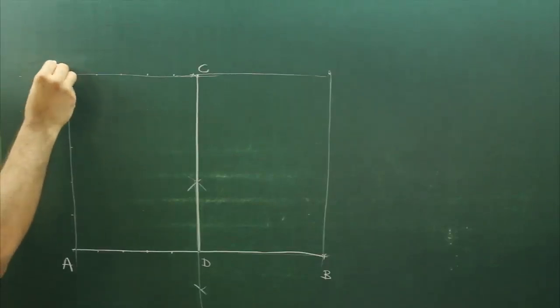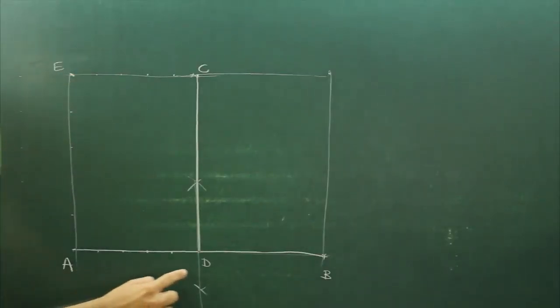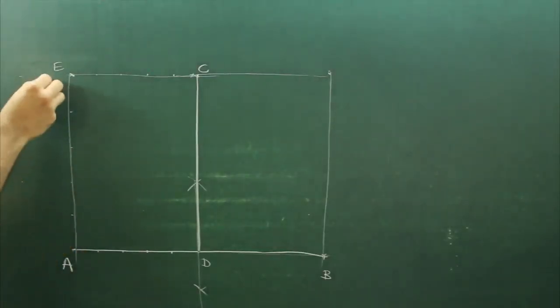Then we need to divide AD into equal parts and AE into equal parts. Let's say if I divide AD into 5 parts, I will divide AE also into 5 parts. If I divide AD into 4 parts, then I will divide AE also into 4 parts. So I will divide AD into 5 parts.